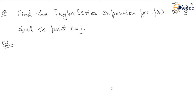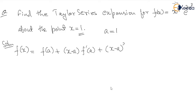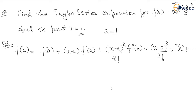About the point x = 1, so x = 1 is nothing but the value a = 1. We know that about any such point the expansion f(x) is given as f(a) + (x − a)·f'(a) + (x − a)²/2! · f''(a) + (x − a)³/3! · f'''(a) and so on for higher values. So in this case a = 1, and x − a becomes x − 1.